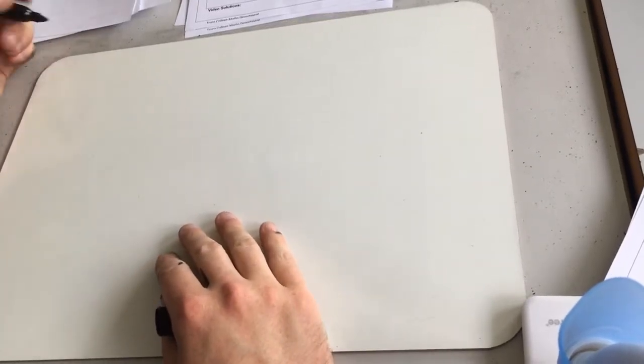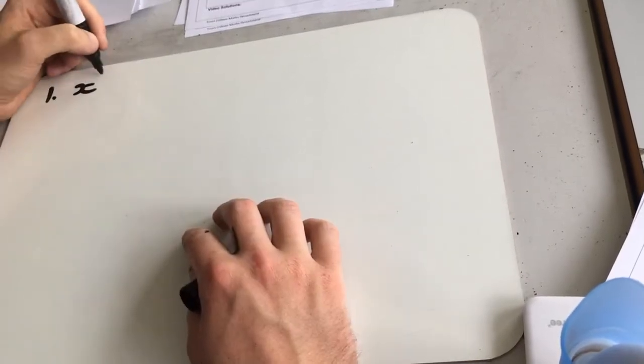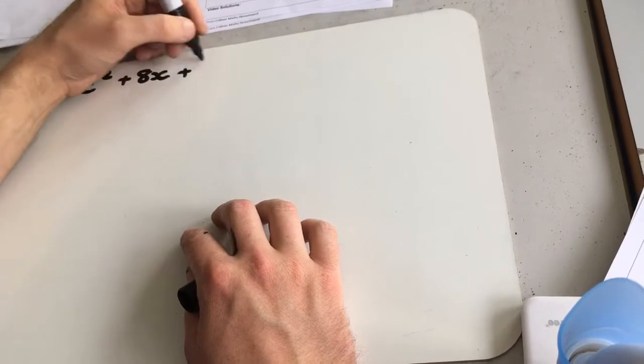Okay, exercise 4b, which we're looking at completing the square, which continues from our quadratic topic. So we're going to try and complete the square on 8x squared plus 8x plus 7.